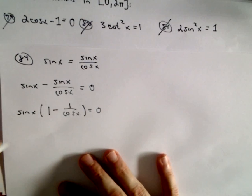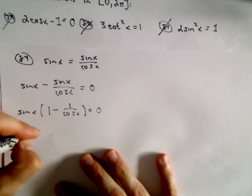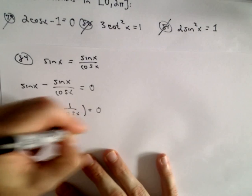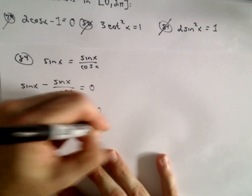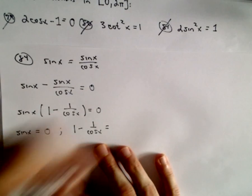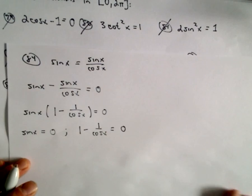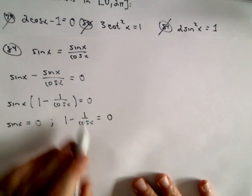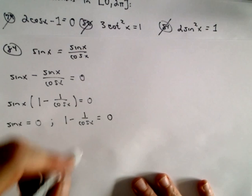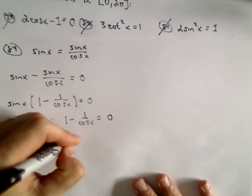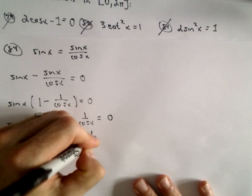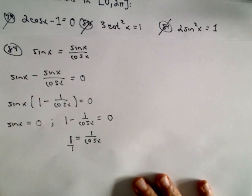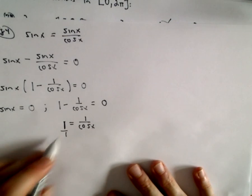equals zero. Well that tells me that sine x either has to equal zero, or 1 minus 1 over cosine x has to equal zero. Well, it's probably easy to see the cosine x has to equal 1 because you'd have 1 minus 1 over 1 would give you 0. If you didn't see that you could always just add the 1 over cosine x to both sides and you can cross multiply. So you'd have cosine x equals 1.